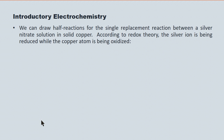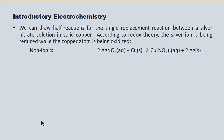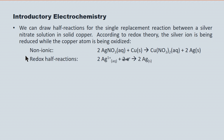Here's another example involving a single replacement reaction between silver nitrate and solid copper. Here's the non-ionic equation — in grade 10, this would have been the single replacement reaction where copper replaces silver in the compound and free silver atoms are released. Using the half-reaction method, we pull down the silver: in silver nitrate, silver exists as a +1 ion. On the reactant side we have the silver ion; on the product side, the neutral silver atom. To go from the ion to the atom, we add one electron per atom — two electrons in total. That's our reduction half reaction.